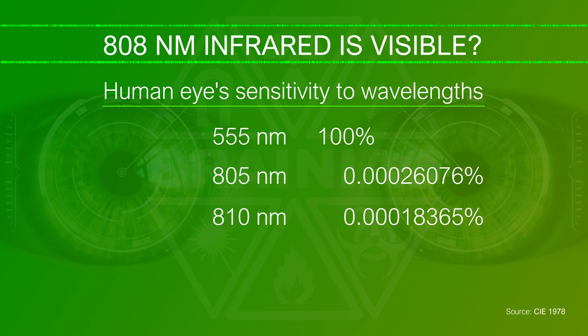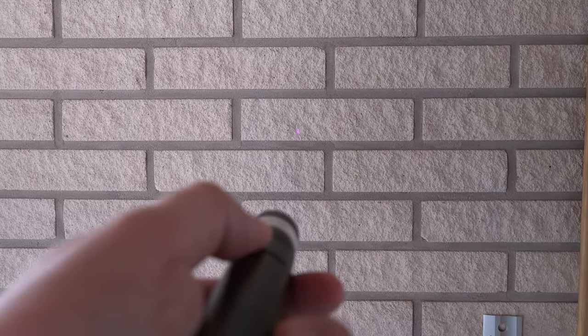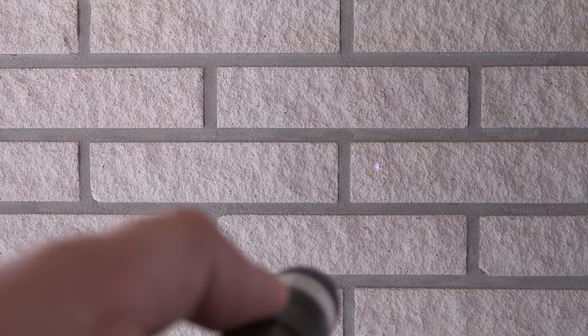At an extreme brightness like a 200 mW laser we can actually see the 808 nm color. At a more everyday brightness it's not visible so we usually call it infrared or near infrared. Our eyes are not digital and will not suddenly shut off from one wavelength to another between red and infrared. It is a gradual decline in sensitivity over a range in the near infrared wavelengths.